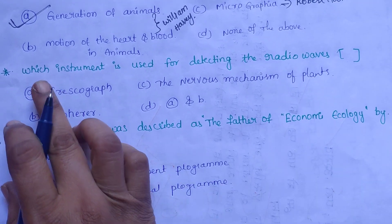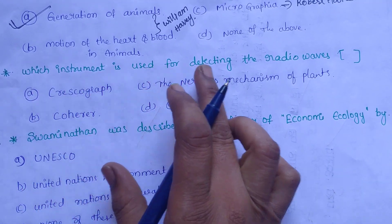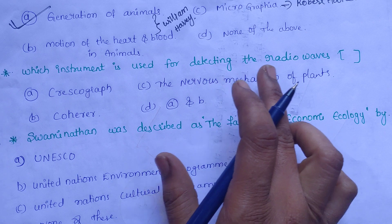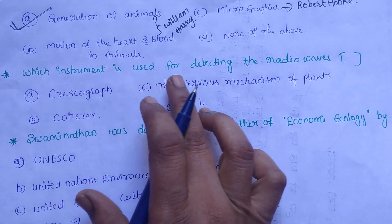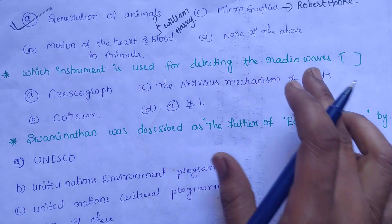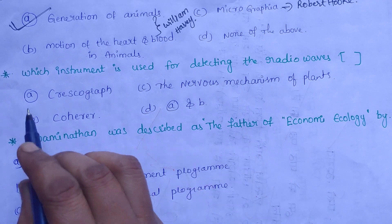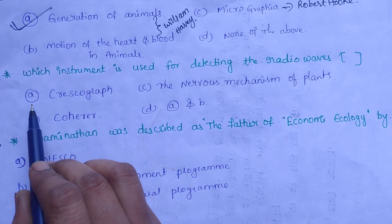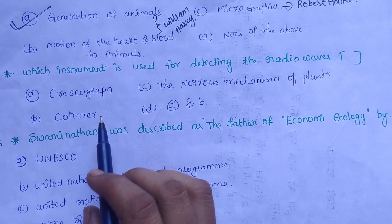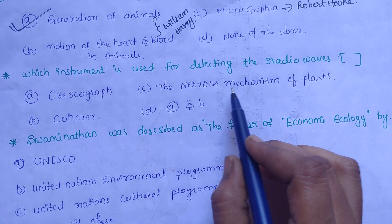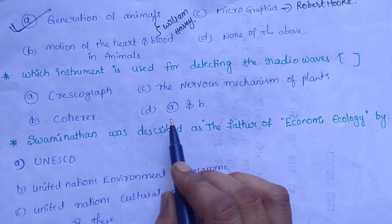The next question is: Which instrument is used for detecting radio waves? Here are the options: A. Crescograph, B. Coherer, C. The Nervous Mechanism of Plants, D. A and B.